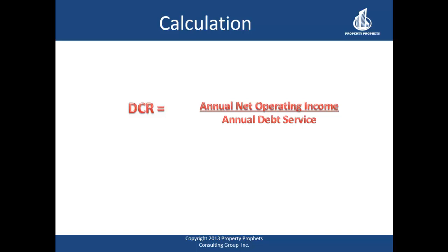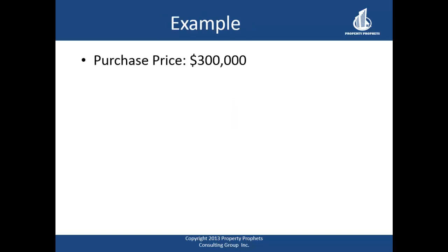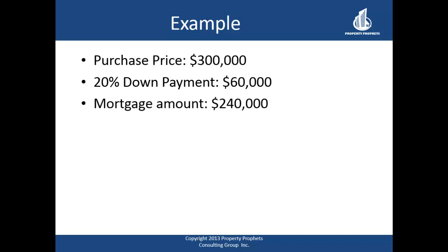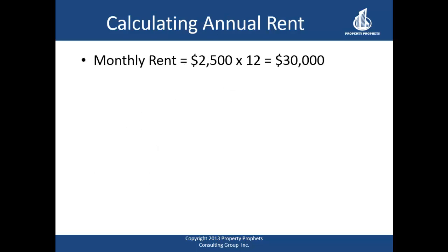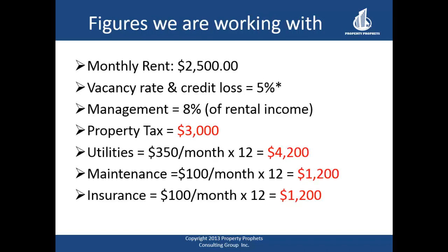Let's break this down with an example. The purchase is a single-family home investment property for $300,000 with a 20% down payment of $60,000, and therefore a mortgage balance of $240,000. The mortgage payment is $1,171.81, based on a five-year fixed rate of 3.29% at 25-year amortization. Monthly rent is $2,500, which is $30,000 per year.